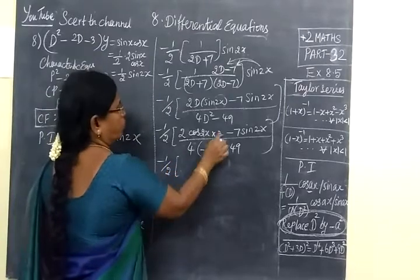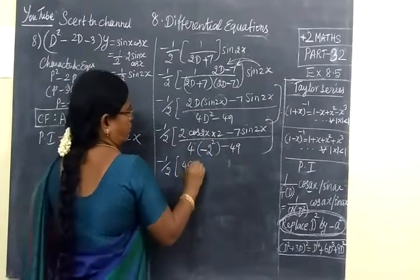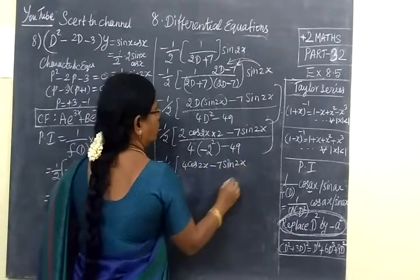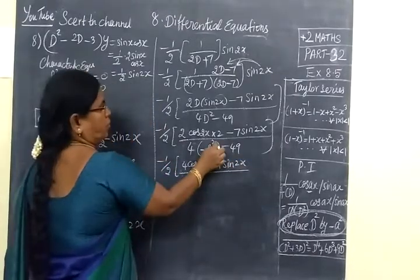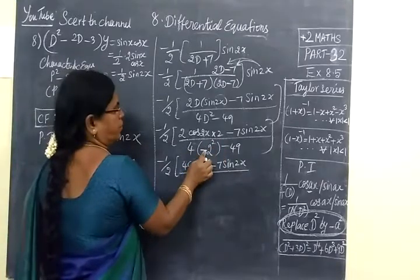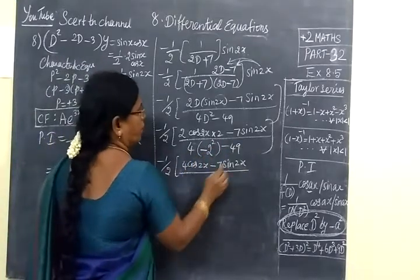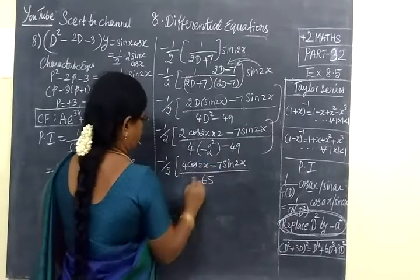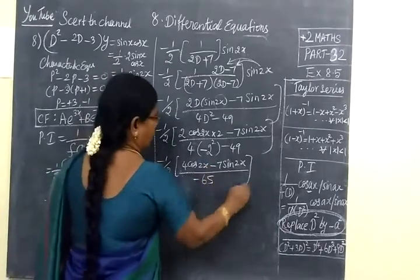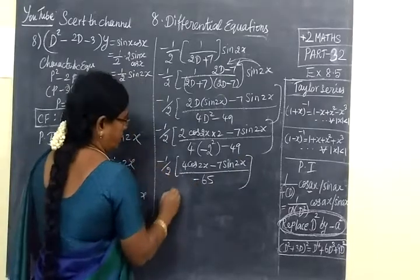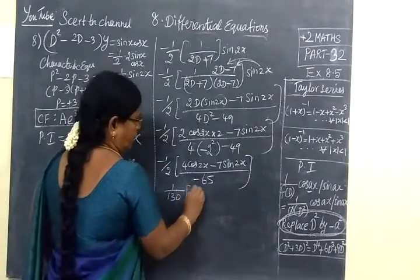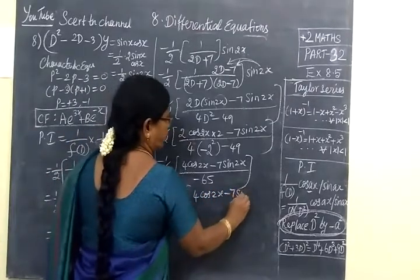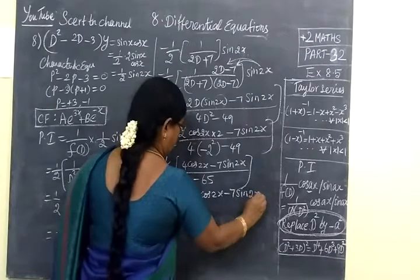So, 4 into D squared minus a squared minus. Minus 4 in 2 squared. So minus half, 2 is 4, 4 cos 2X minus 7 sin 2X by 4 squared is 4, minus 16 minus 49 is minus 65. Minus into minus, plus. So 1 by 130, 4 cos 2X minus 7 sin 2X.